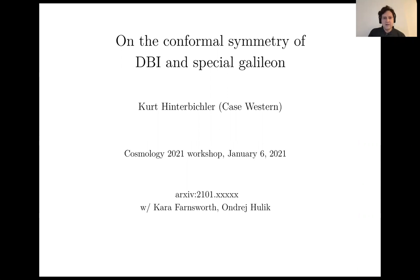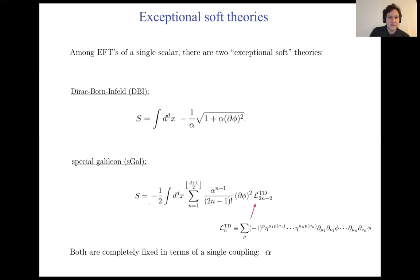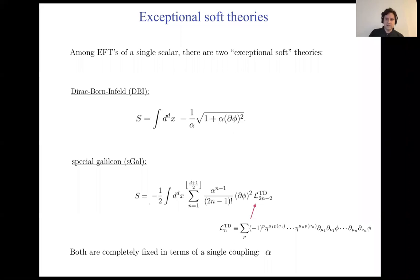This is about hidden symmetries in the DBI theory and the special Galilean theory. As cosmologists, we're often interested in effective field theories that have just a single scalar degree of freedom. Among such theories, there are two exceptional theories that have the softest possible behavior of the amplitudes: the DBI theory and the special Galilean theory. Both of these theories have a single coupling constant alpha and are otherwise completely fixed.